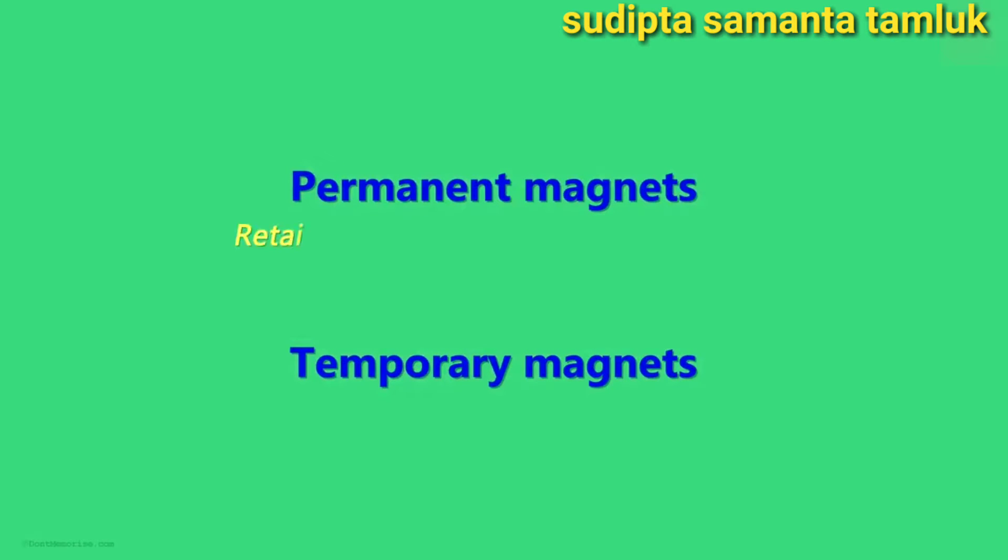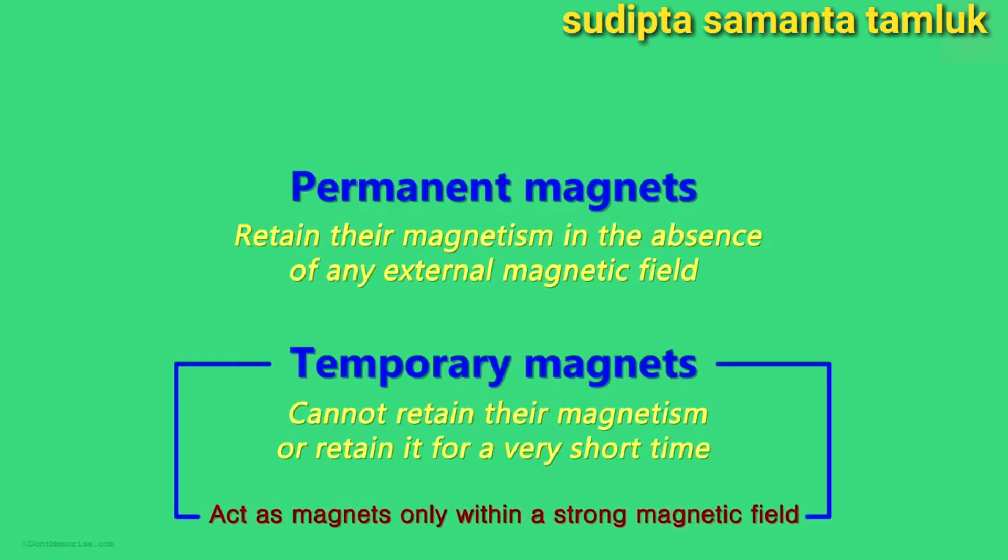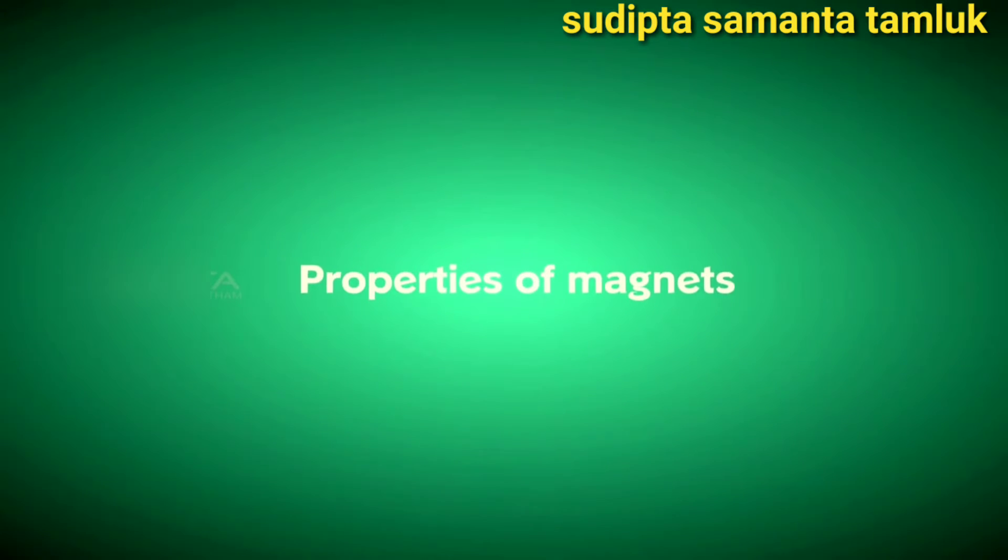The magnets that retain their magnetism in the absence of any external magnetic field are called permanent magnets. Their magnetic strength never really fades on its own. And the magnets that cannot retain their magnetism or retain it for a very short time are called temporary magnets. Temporary magnets act as magnets only while they are within a strong magnetic field.